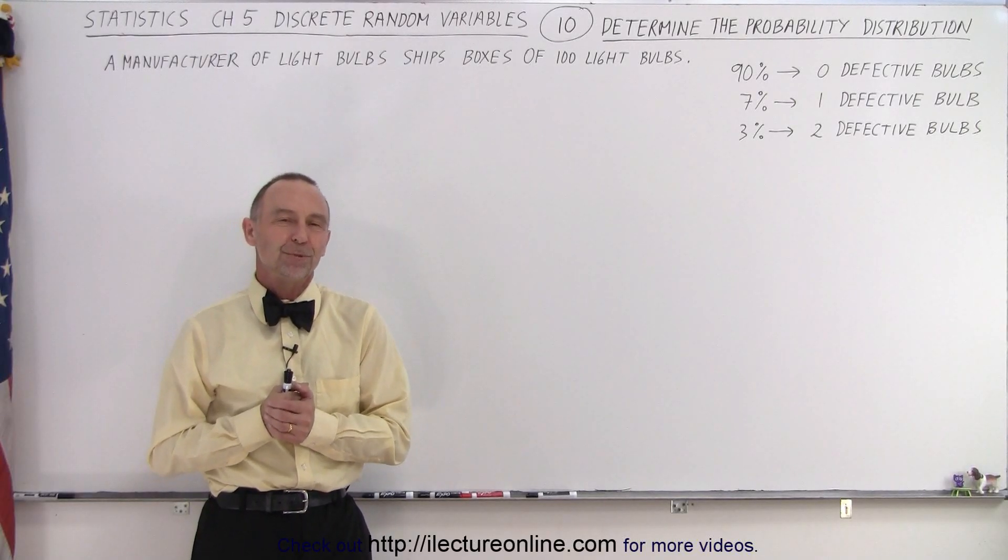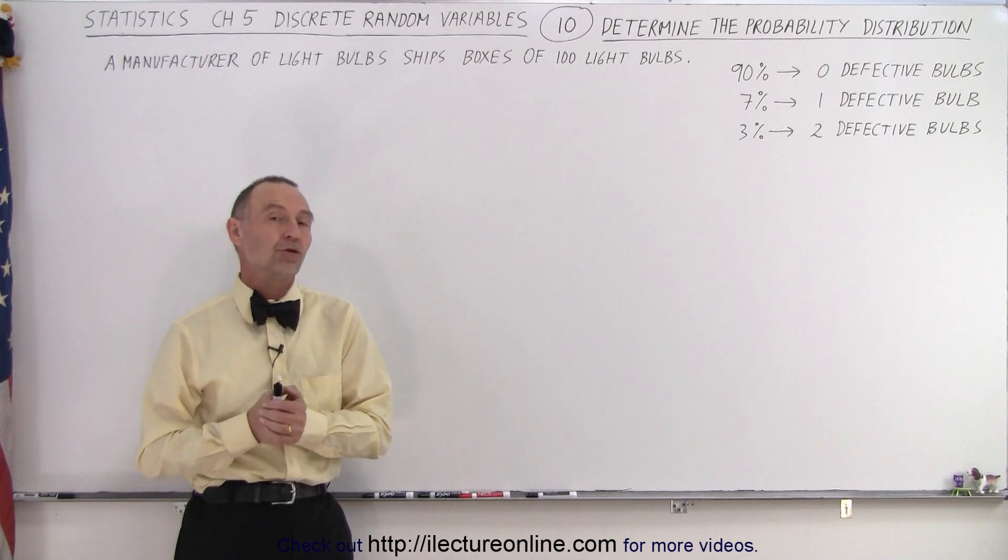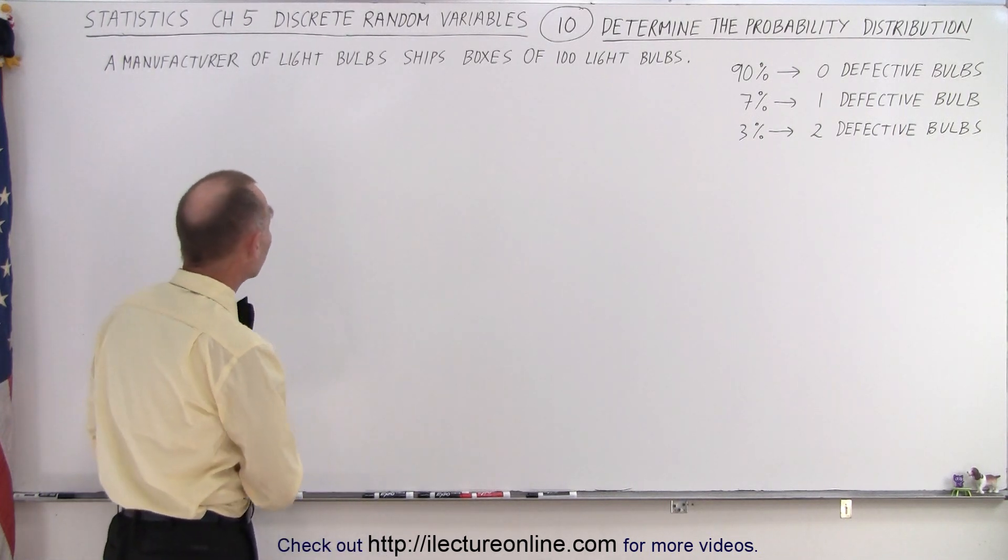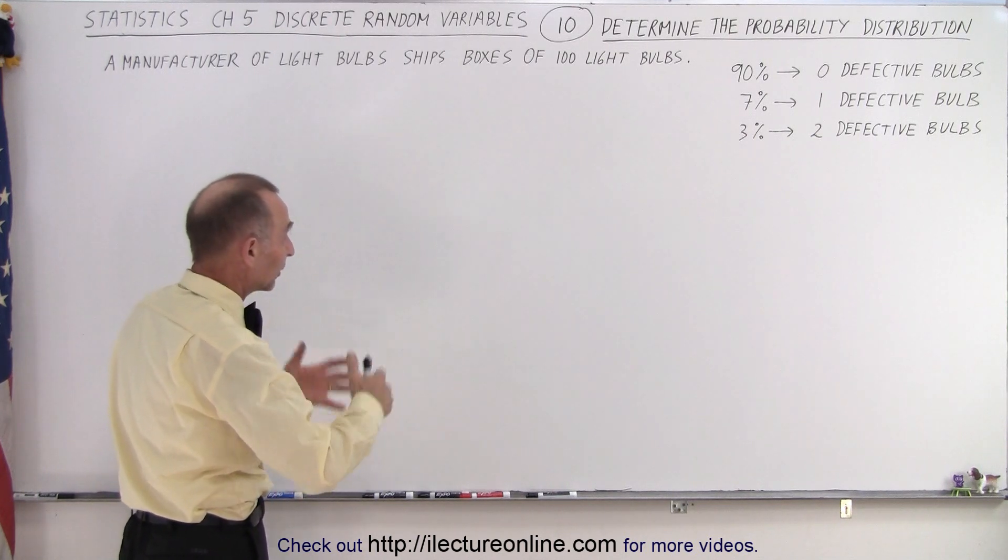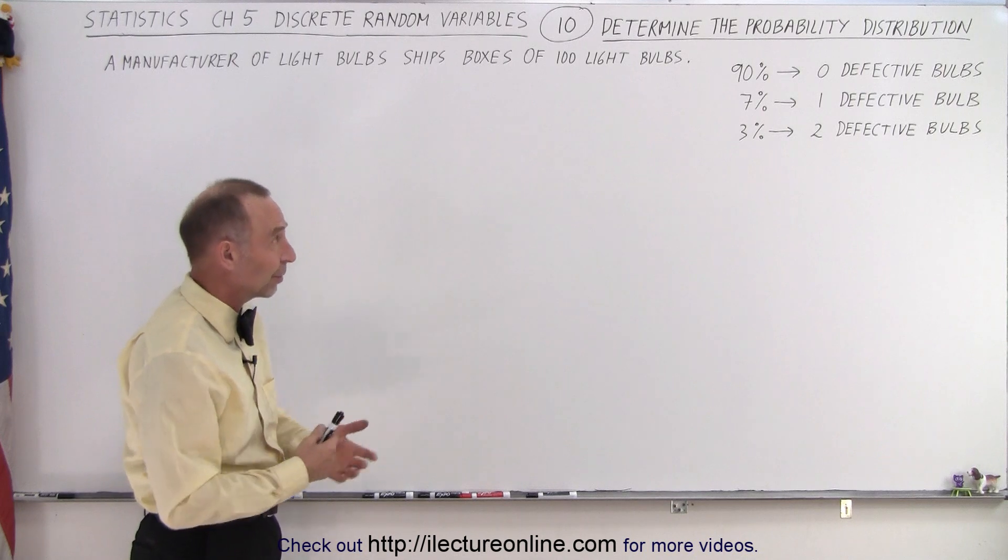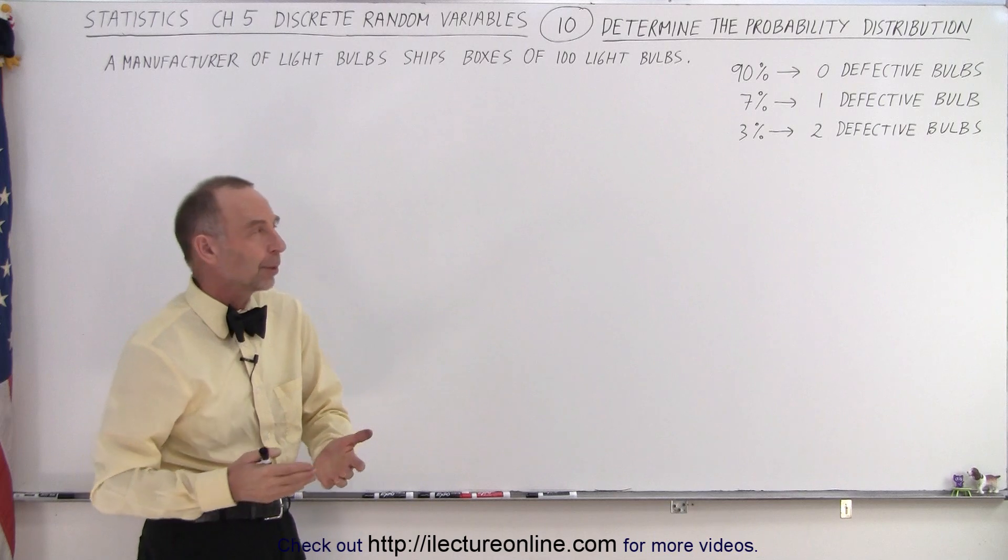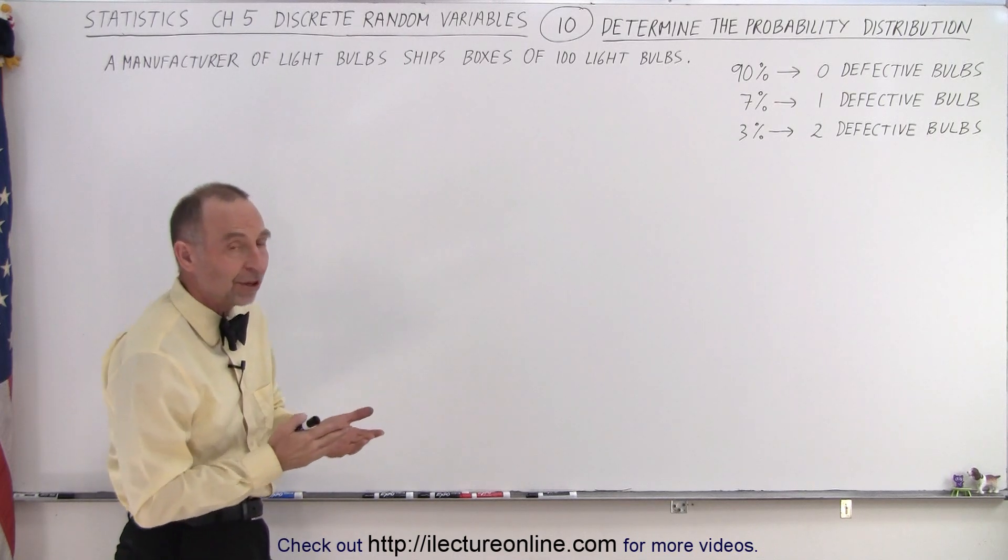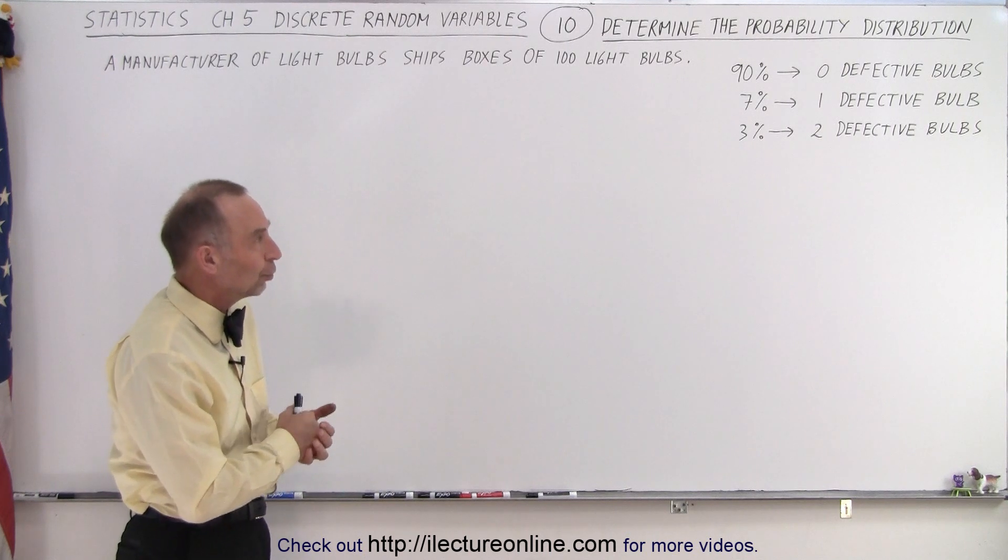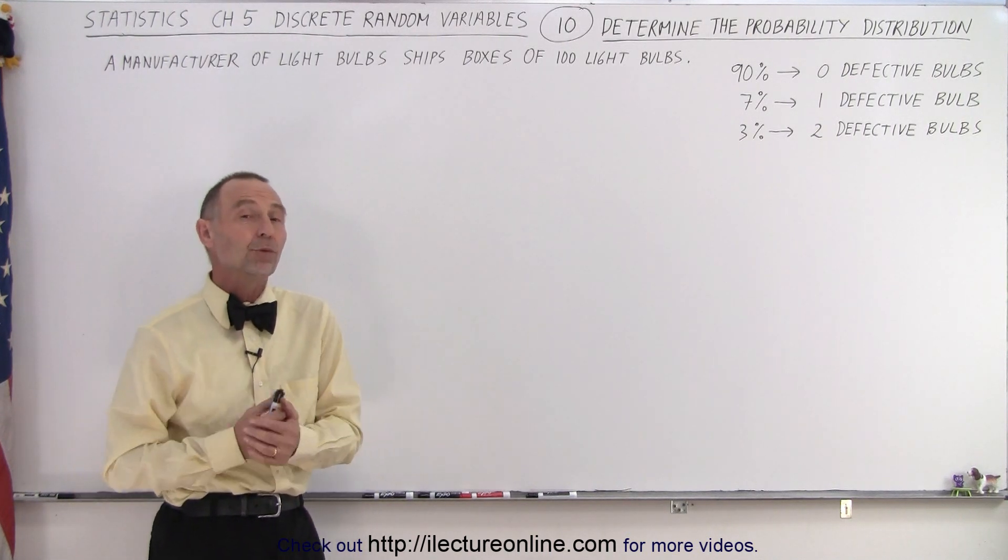Welcome to our lecture online. Here we have another example where we're going to determine the probability distribution. Let's say that we're looking at a manufacturer of light bulbs. They ship boxes of 100 light bulbs at a time. From measuring or testing some of these boxes, we determine that 90% of the cases, 0 of the light bulbs are defective. 7% of the cases, 1 light bulb is defective, and 3% of the cases, 2 light bulbs are defective. So what does that probability distribution look like?